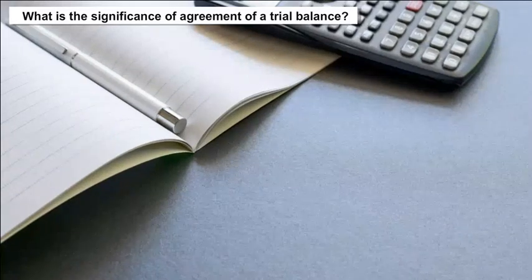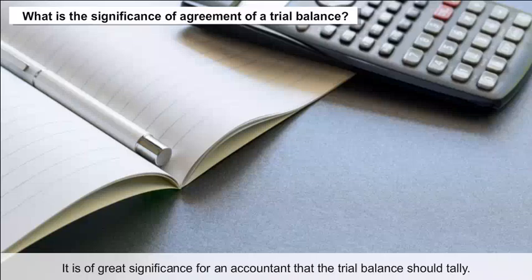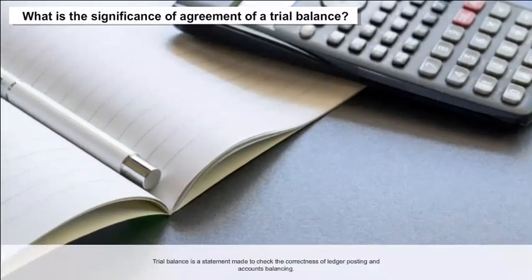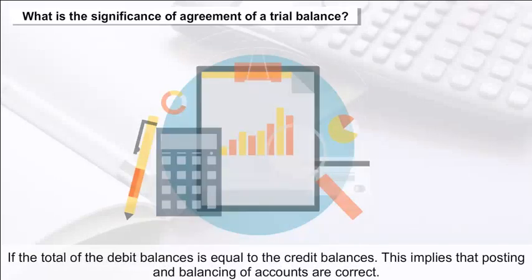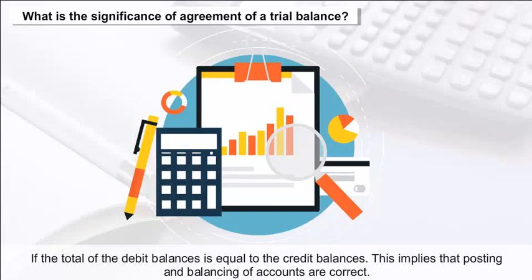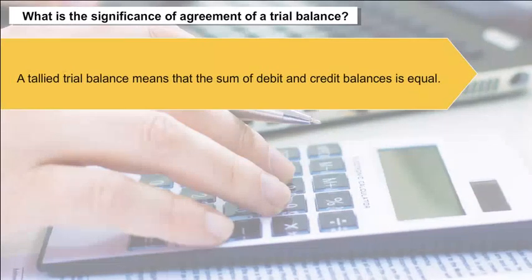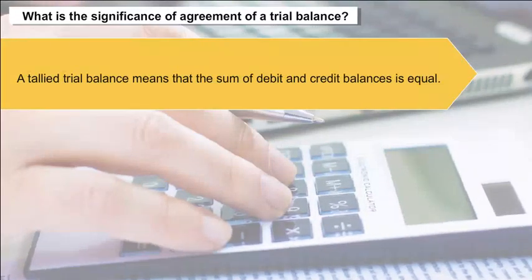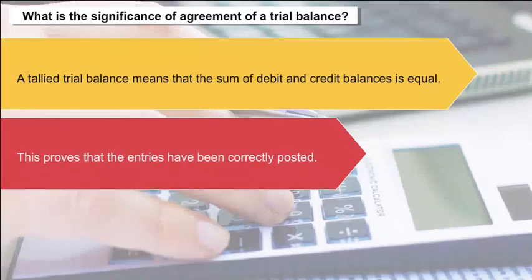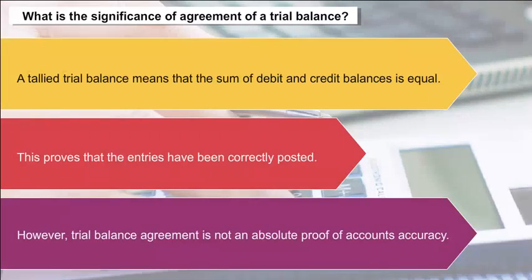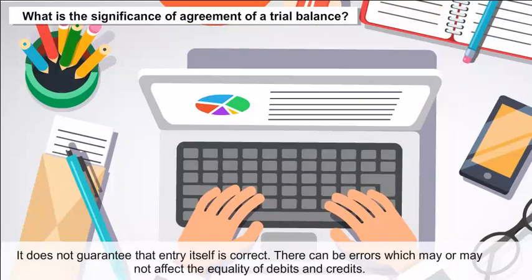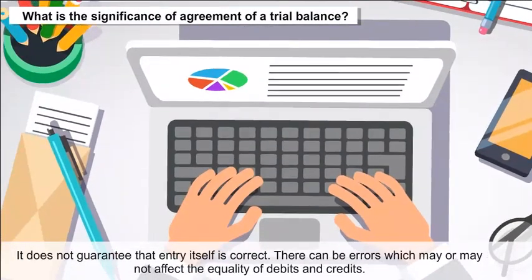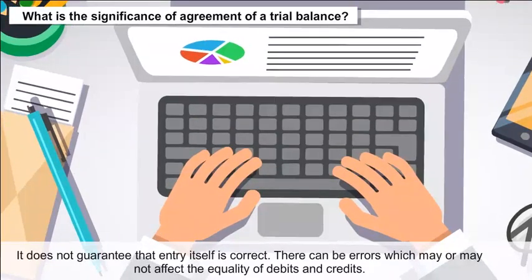The significance of agreement of a trial balance is great for an accountant. If the total of debit balances is equal to the credit balances, this implies that posting and balancing of accounts are correct. A tallied trial balance means the sum of debit and credit balances is equal, proving entries have been correctly posted. However, trial balance agreement is not an absolute proof of accounts accuracy — it does not guarantee that the entry itself is correct, as there can be errors which may or may not affect the equality of debits and credits.